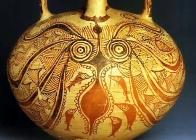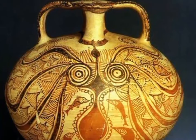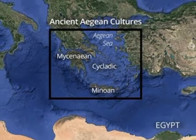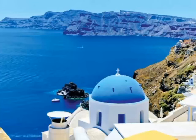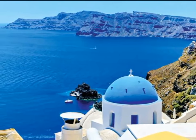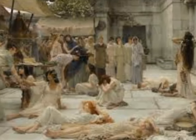Aegean Art: The term Aegean art refers to a cluster of different cultures that flourished in the area of the Aegean Sea in the Eastern Mediterranean.